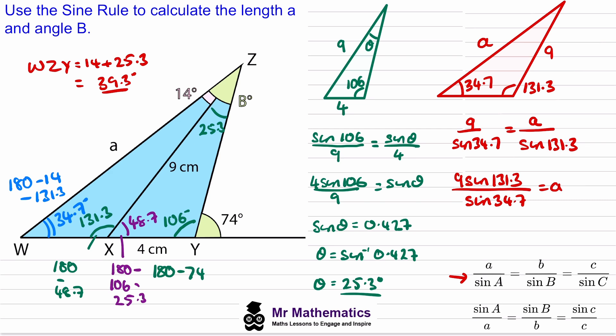Working this out on our calculators we get A is approximately 11.8 centimeters to one decimal place.